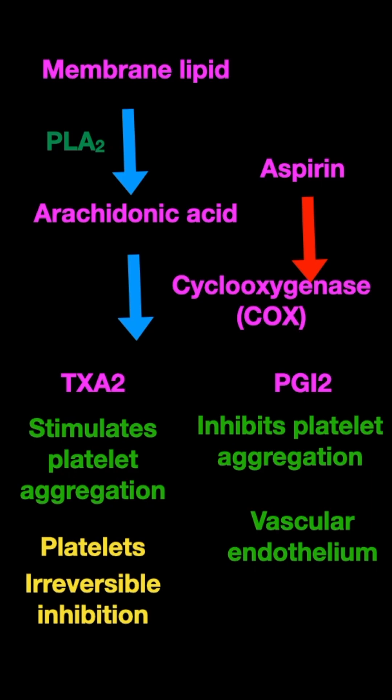Because platelets do not have a nucleus. So once that is inhibited, only when new platelets enter into the circulation will thromboxane A2 become active again. On the other hand, prostaglandin I2, even if it is inhibited, can be resynthesized within the endothelial cells.